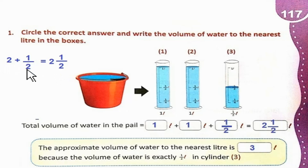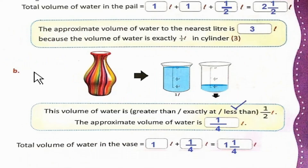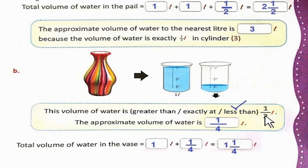जब भी हम whole number और fraction को add करें तो हम उसको directly 2 and 1/2 लिख सकते हैं. The approximate volume of water to the nearest liter is 3 liter, because the volume of water is exactly half liter in the third cylinder. Part B — the volume of water is less than 1/2 liter. Scale पर करीब ترین number 1/4 है. So, the approximate volume of water is 1/4 liter.